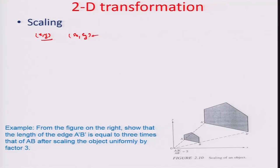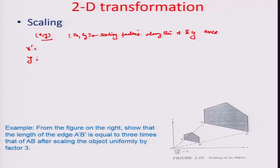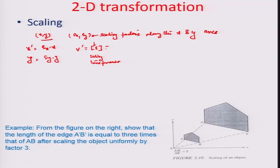For a point in space x and y, we want to find the impact of scaling along the x and y directions using two scale factors Sx and Sy. The modified coordinates x-dash and y-dash are represented as Sx·x and Sy·y respectively.